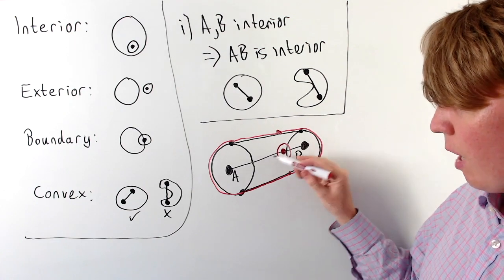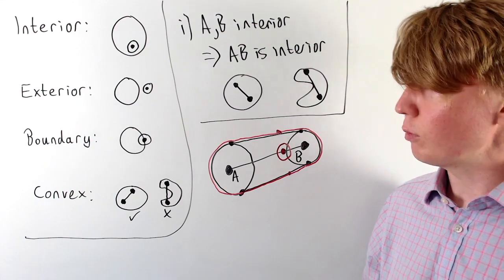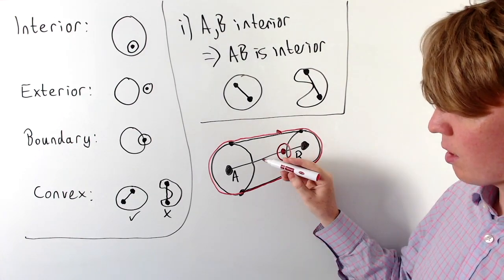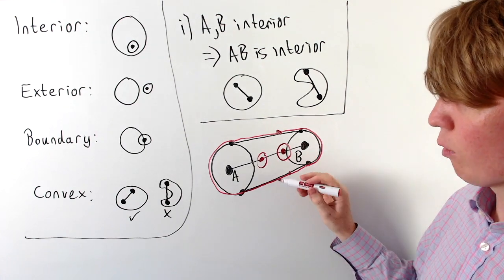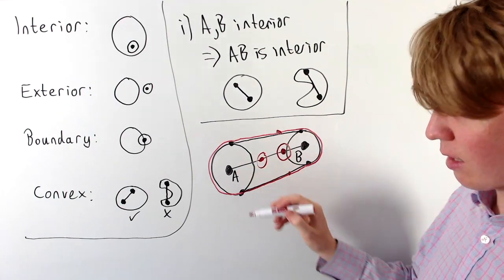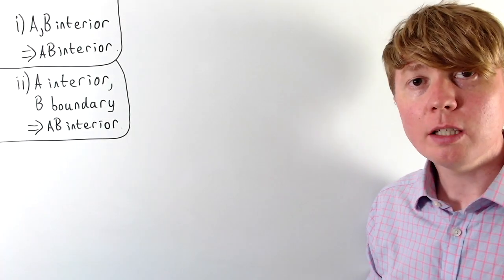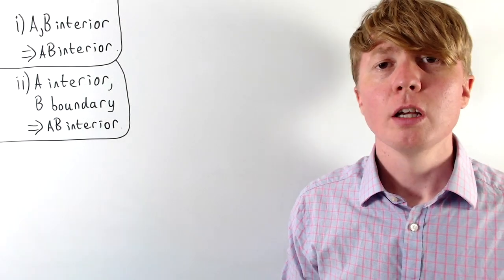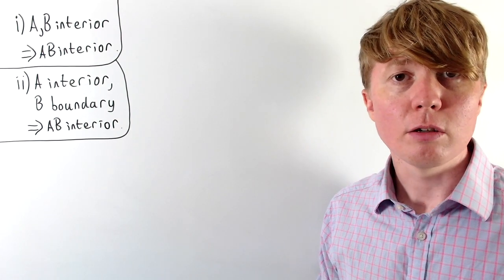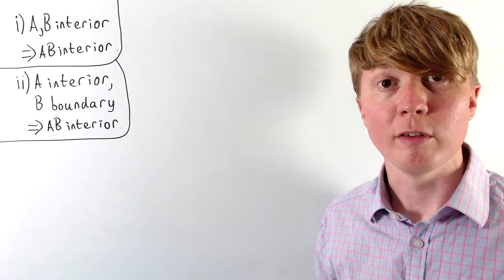So we've shown that if we've got two interior points of our convex set, then every point on the line segment between them is also an interior point, because it belongs to a small enough circle contained within the larger figure. Now let's consider the case where A is an interior point and B is a boundary point which belongs to our convex set. The claim is that all points between A and B still have to be interior points.